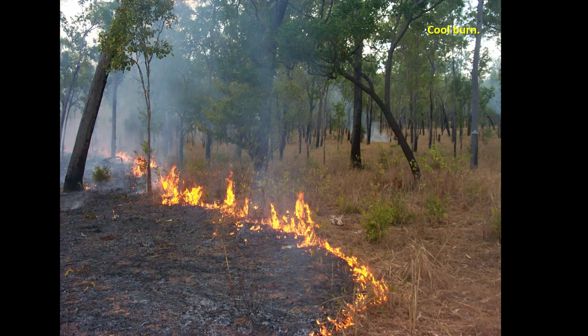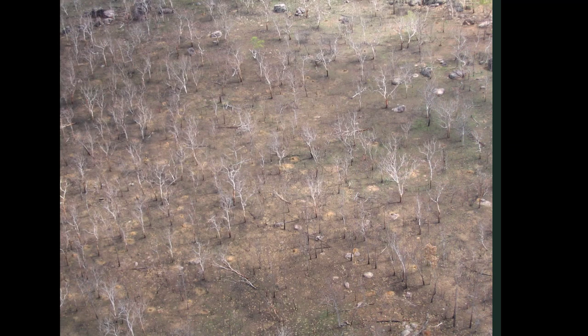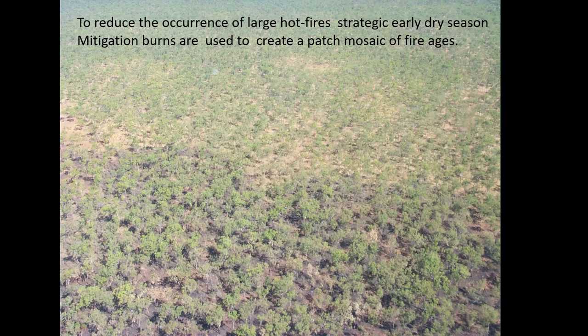In contrast, a hot fire has significant effects on forest cover and local plants and animals. These fires occur very late in the year — late in the dry season, long after the monsoon ends, when grass is very dry and the weather is very hot. To reduce the occurrence of late, hot, dry-season fires, strategic early dry-season mitigation burns are used to create a patch mosaic of fire ages.